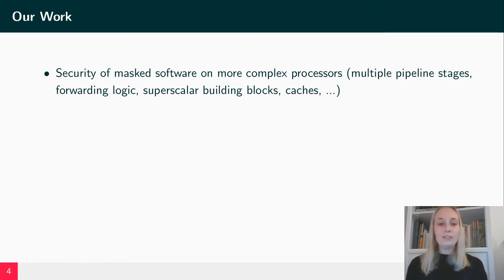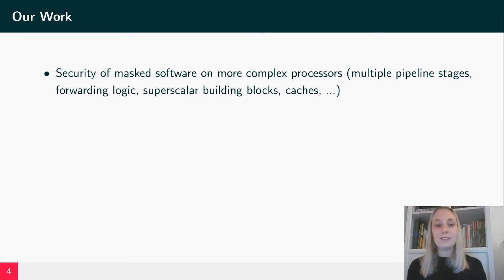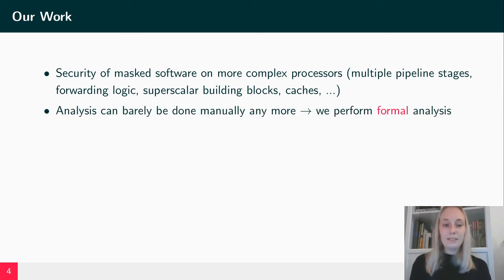If you apply lazy engineering or fine-tune your masked software, you might still get leakage in your manual assessments and will not easily be able to find out where this leakage comes from or how to fix it. Therefore, we want to focus in our work on the security of masked software on such a complex processor — meaning processors with multiple pipeline stages, forwarding logic between the stages, that may be superscalar and have even data caches — as this analysis can barely be done manually anymore.